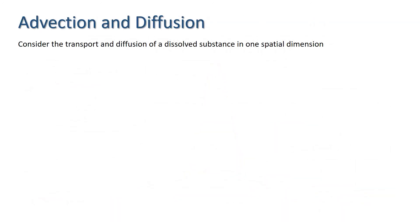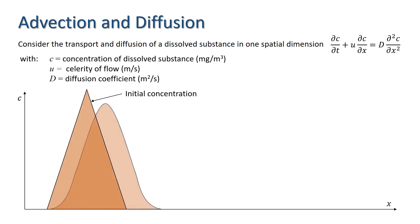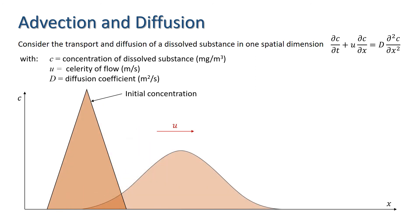We now look at the transport and diffusion of a dissolved substance — a combination of advection and diffusion — described in one spatial dimension by dc/dt + u·dc/dx = D·d²c/dx², where c is the concentration, u is the celerity, and D is the diffusion coefficient. We would expect the distribution to be transported with the flow at velocity u and to diffuse at the same time.